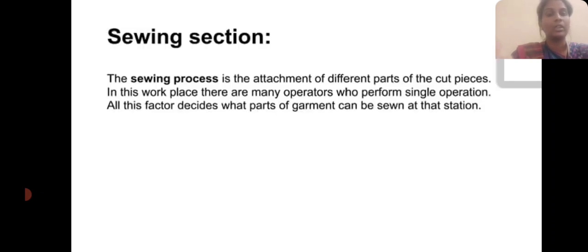Today we are discussing about sewing processing — the sewing section. The sewing processing is the attachment of different parts of the cut pieces. In the workplace, there are many operators who perform a single operation. Parts of the garment can be sewn at the section.